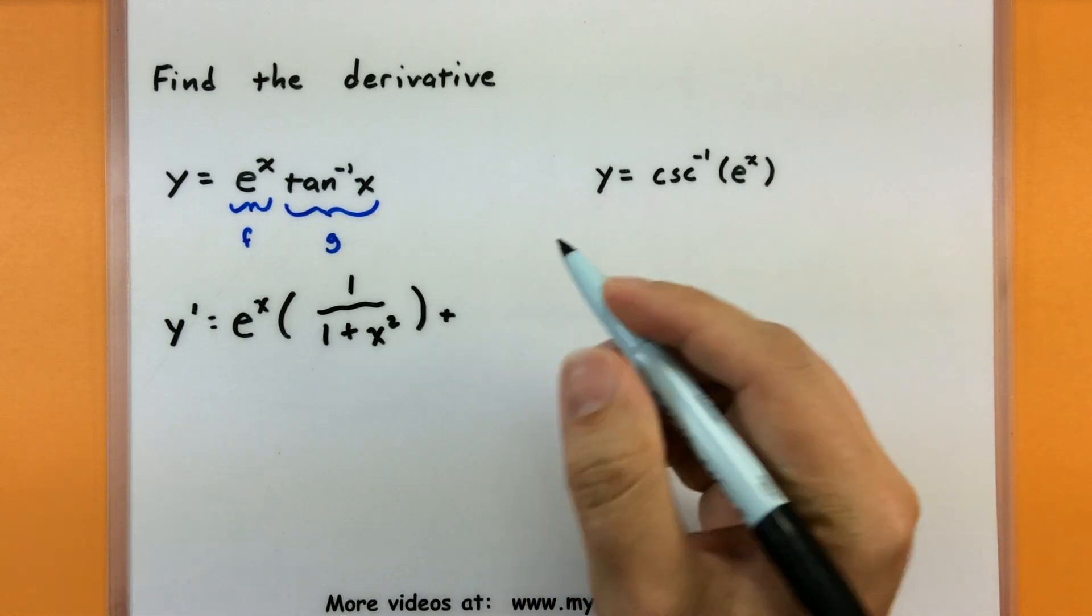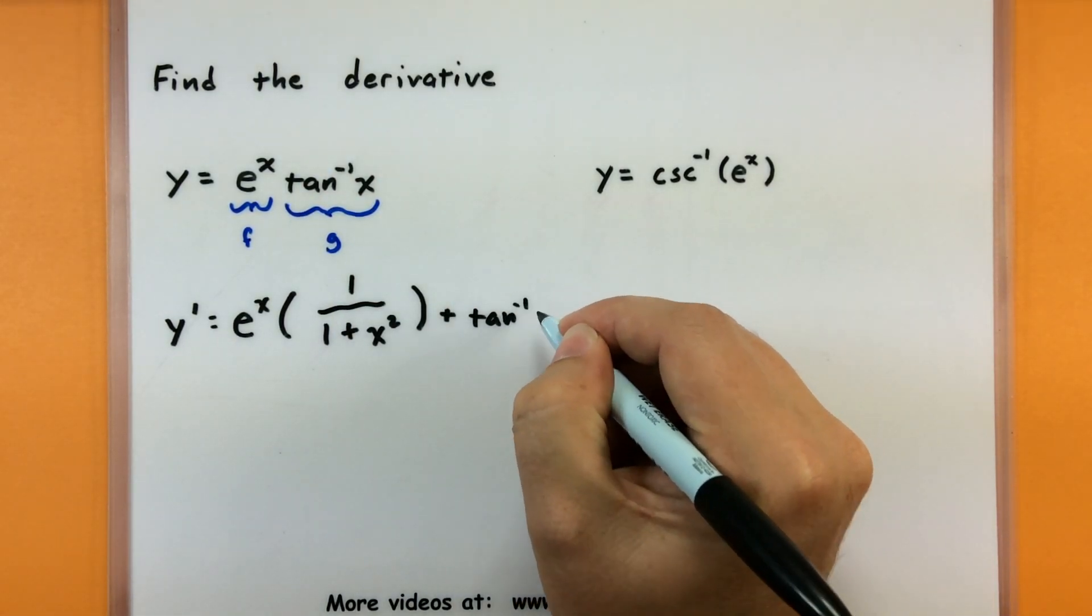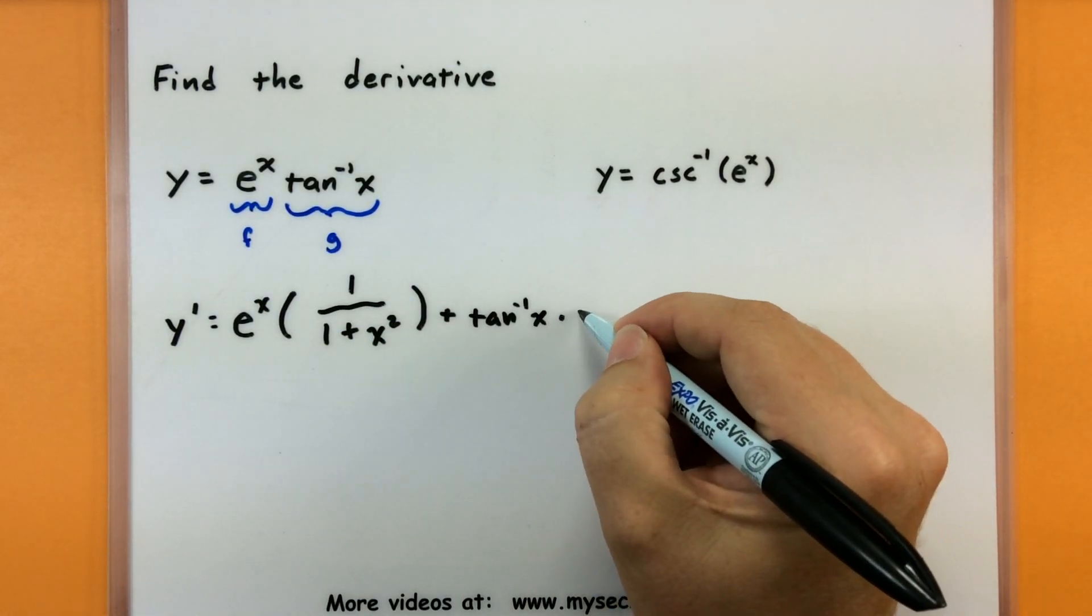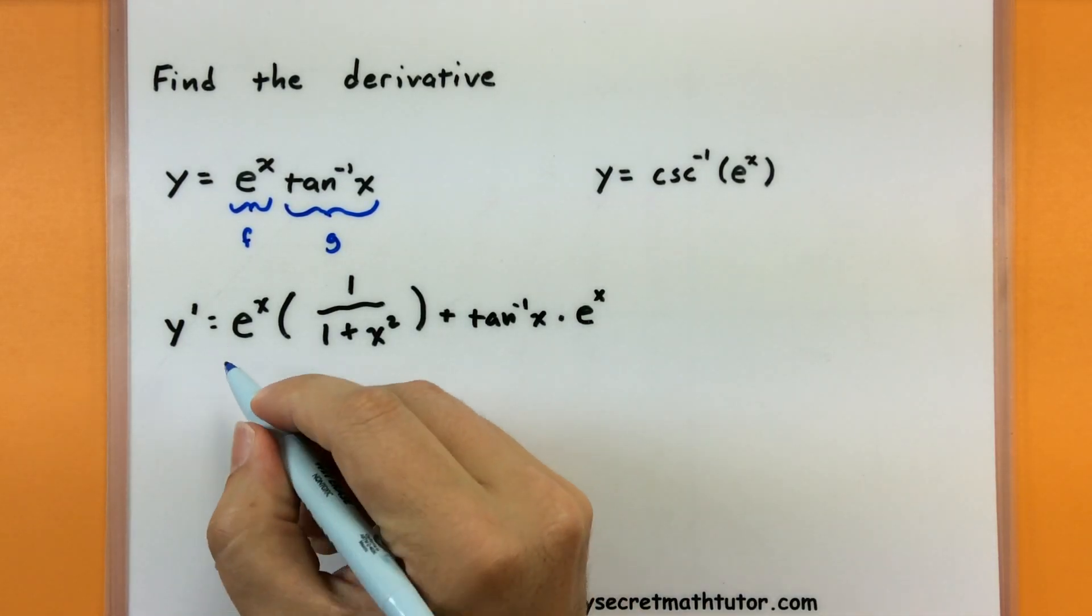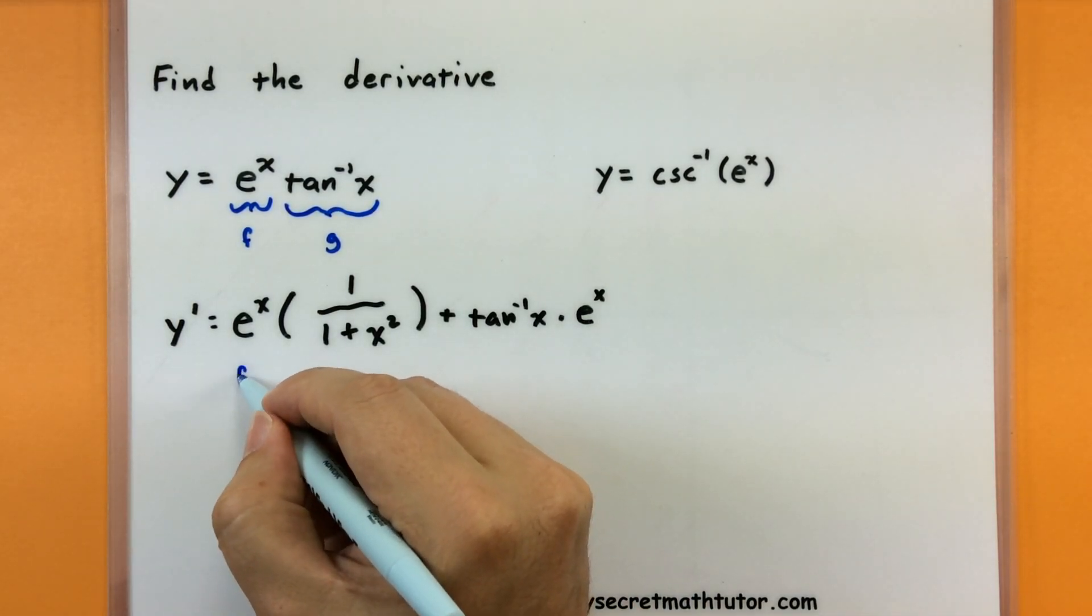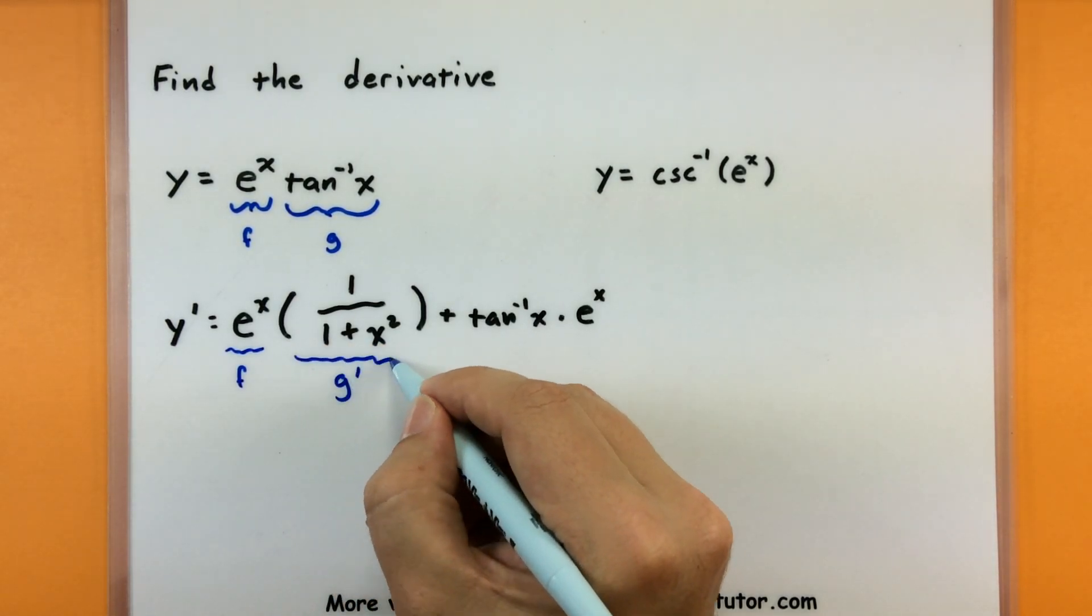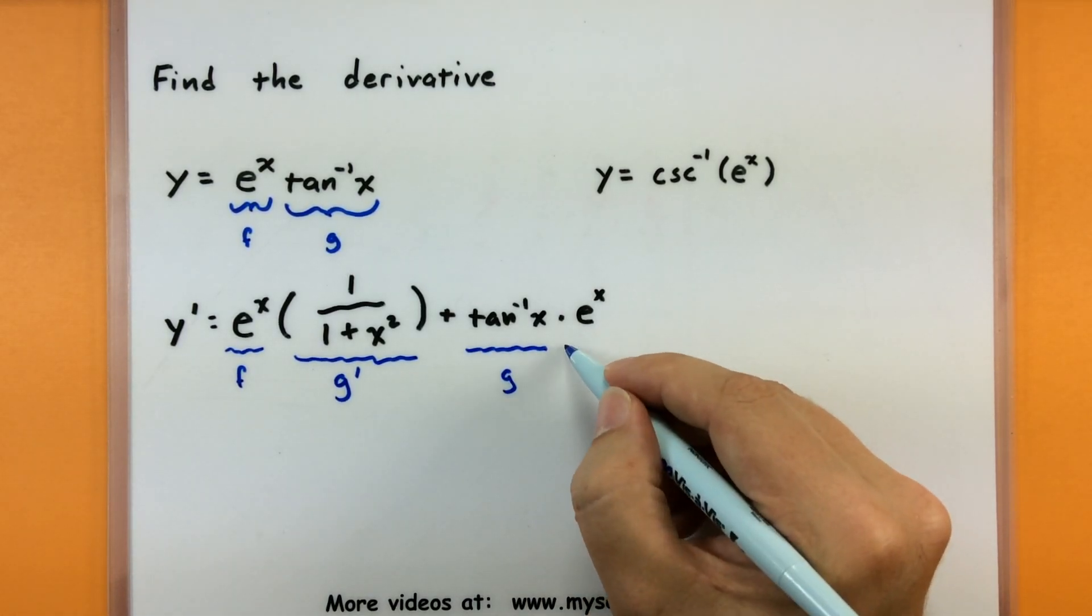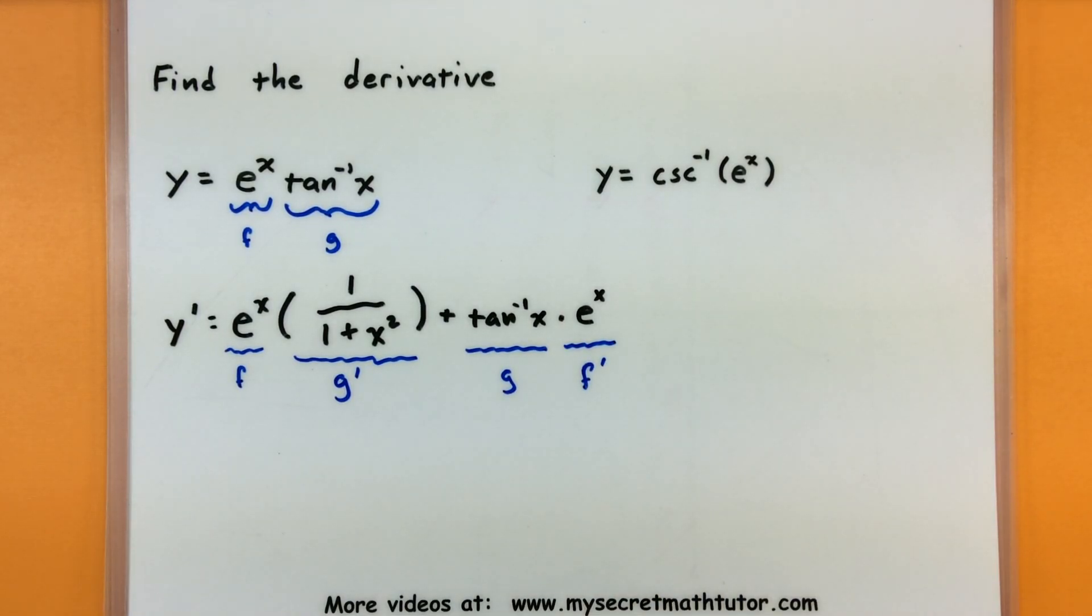All right, continue on with our product rule. Now I'll take my second function, unchanged, don't mess with it, don't do anything, multiplied by the derivative of the first function, so e to the x. So I just want to point out what I've done here. So I have my first function, that's just the e to the x. We have the derivative of the second, yep, there's all that stuff. Now we have our second function, just as it is, and derivative of the first, derivative of a natural exponential, of course, is just that same natural exponential, e to the x.